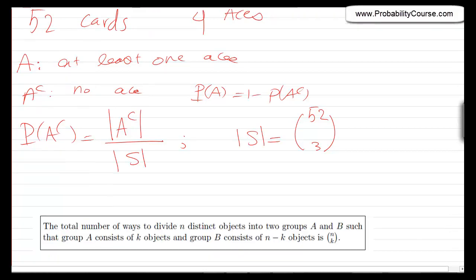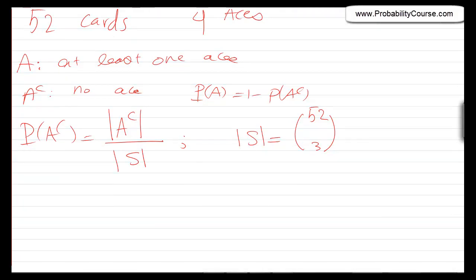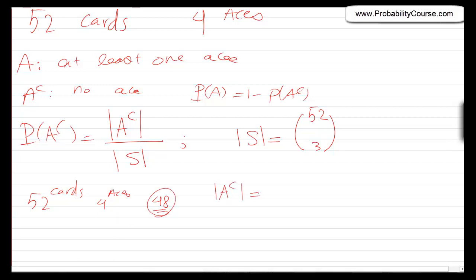In how many ways can I choose three cards such that there is no ace? There are 52 cards, four aces, and 48 cards that are not aces. So the number of elements in A complement is 48 choose 3 — I choose three cards from the non-ace cards. Therefore, probability of A is one minus (48 choose 3) divided by (52 choose 3). That is the answer. It's okay to leave it in this form, or use a calculator to compute the numerical value.